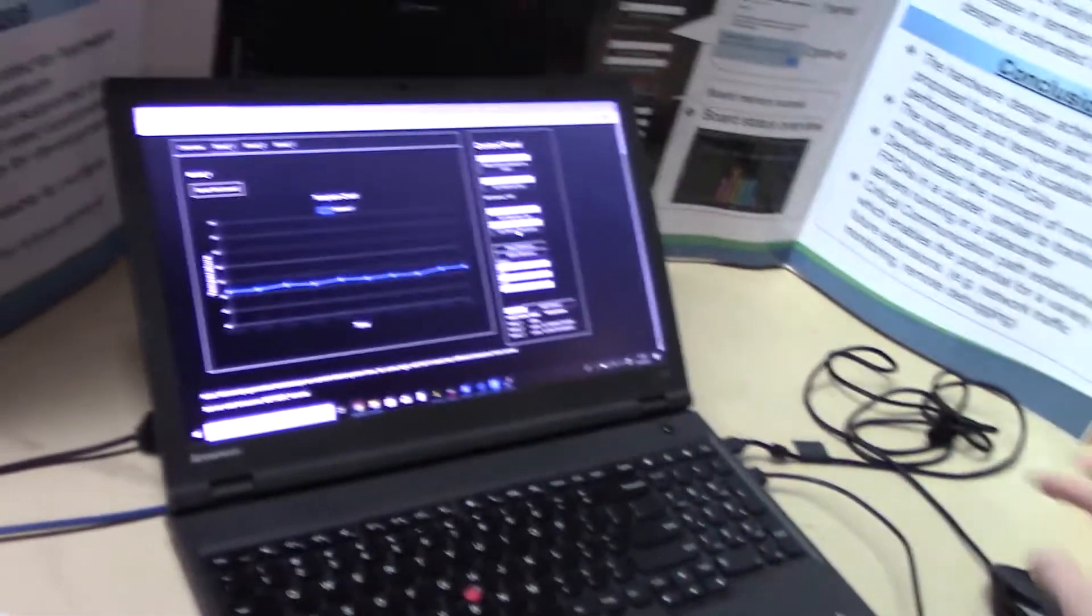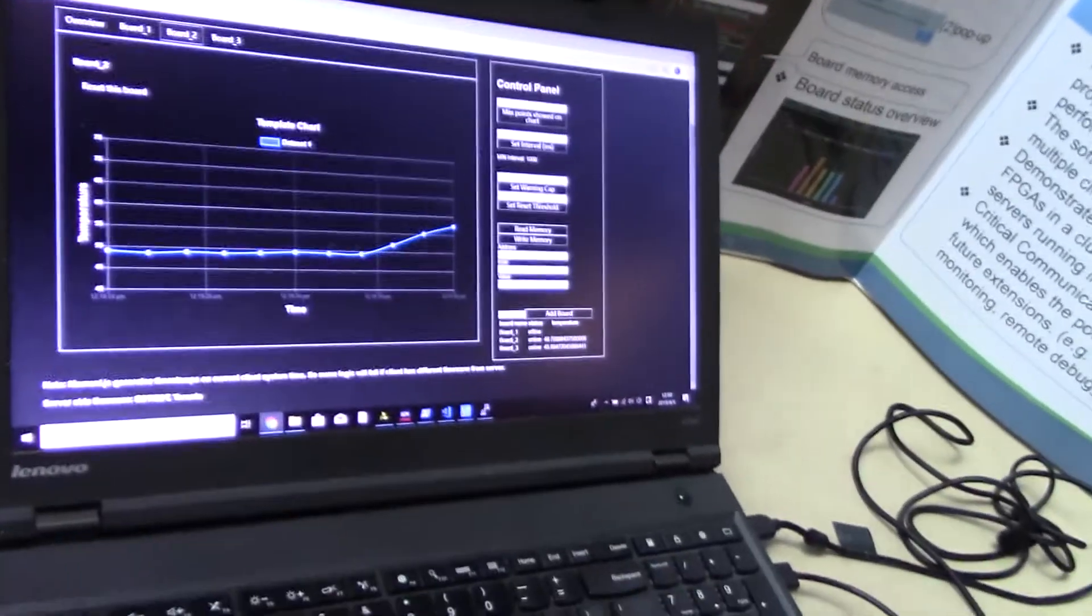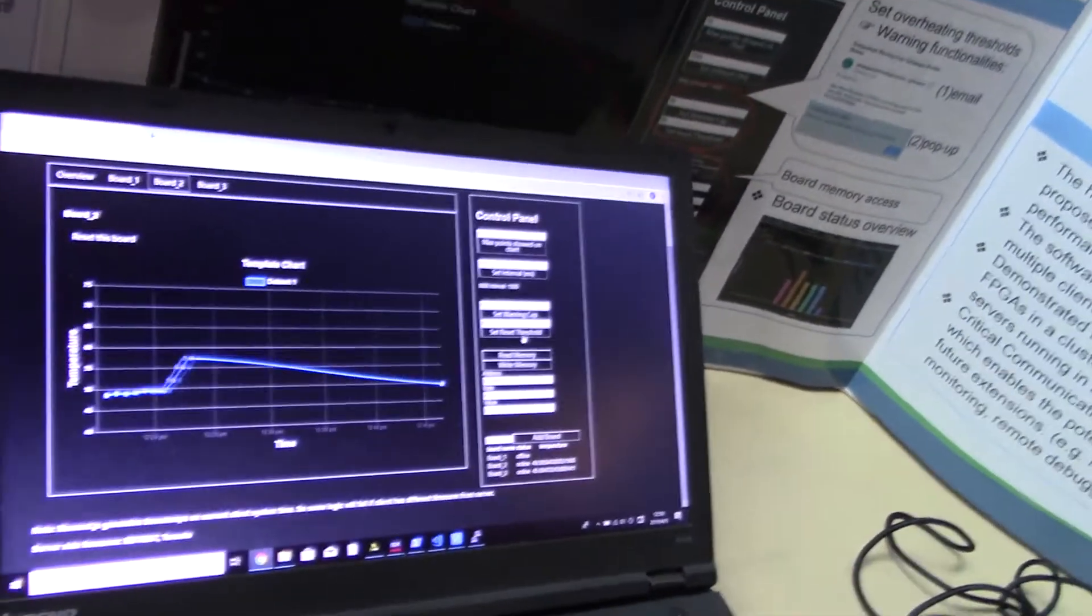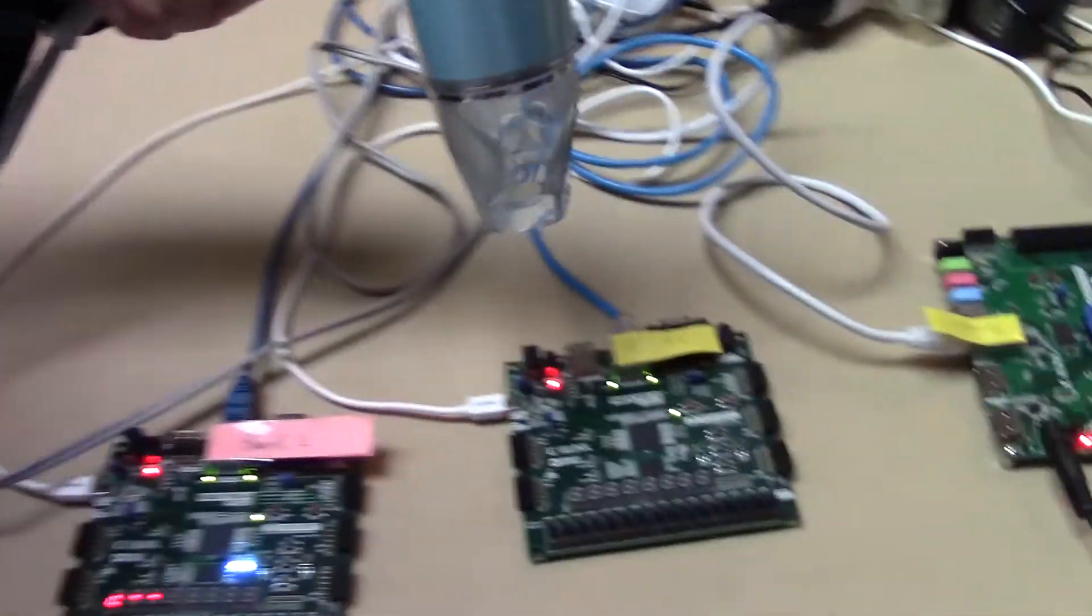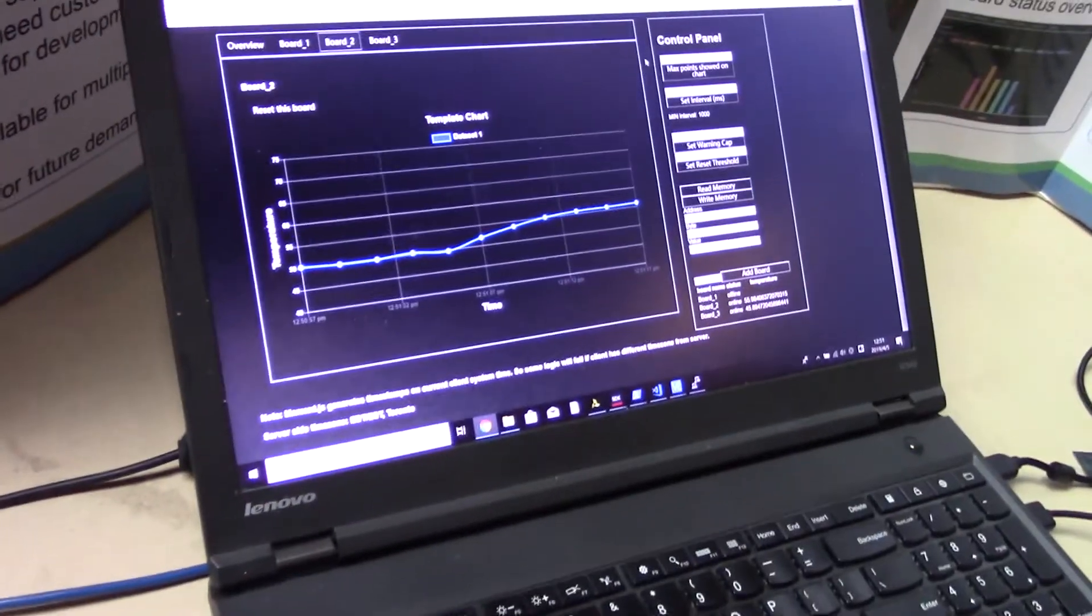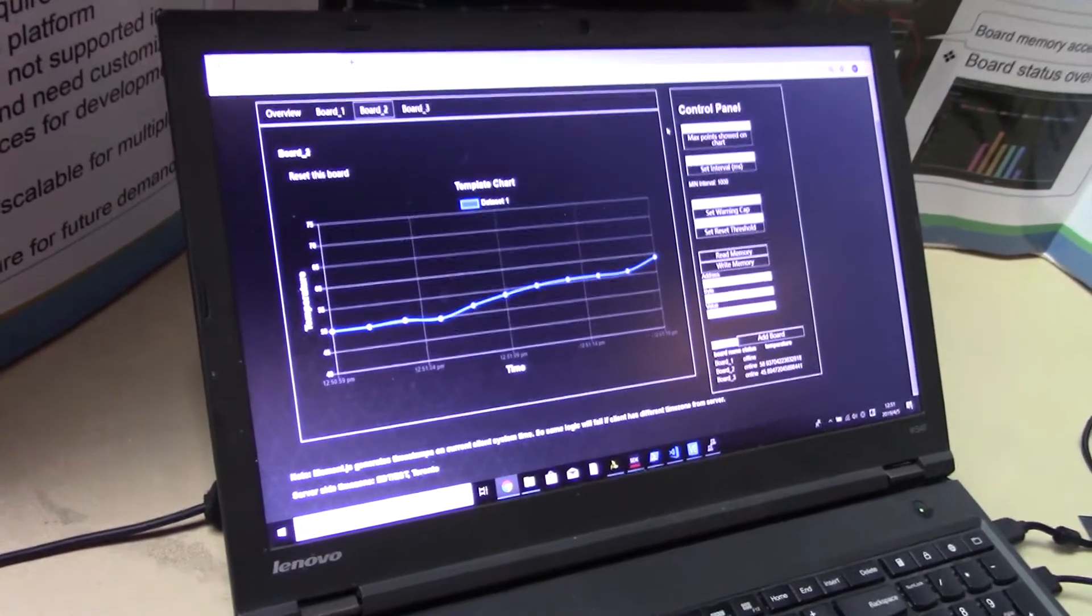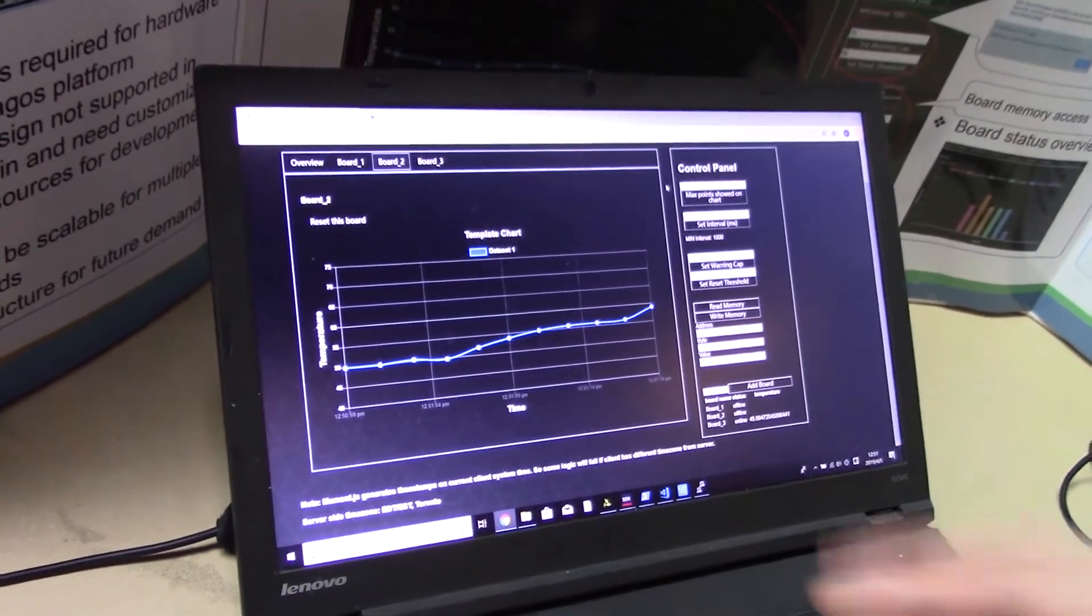The other thing I'd like to show is that if we set a temperature threshold for a board, meaning that the board will be reset if the temperature exceeds the value, we set it and use a hair dryer to increase the temperature of the FPGA. As temperature increases, that's the real time value, and after it exceeds 60 you can see the board gets reset as well.